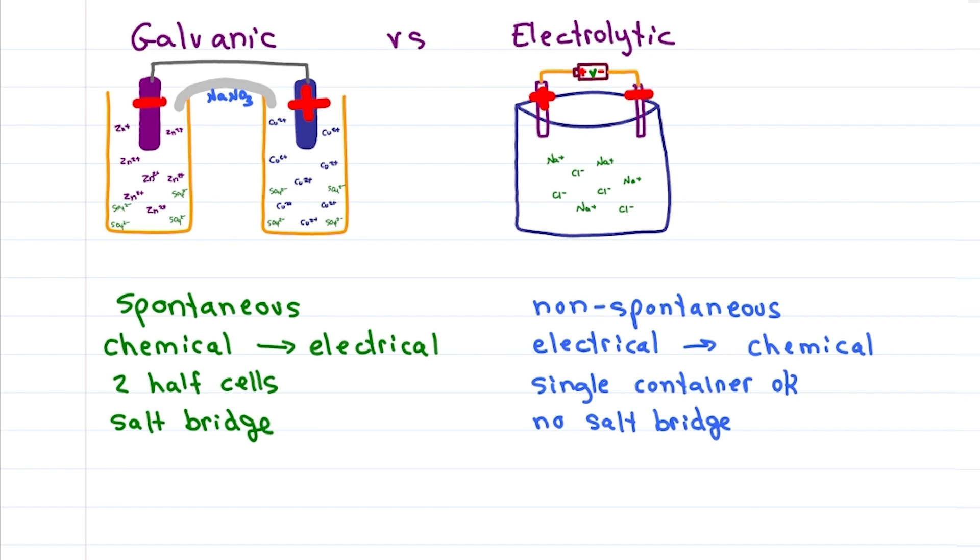And finally, the charges. The galvanic cell spontaneously gives up electrons at the anode making it negative, and accepts electrons at the cathode making it positive. While the electrolytic cell pumps electrons out at the cathode making it negative, and forcibly pulls in stolen electrons at the anode making that positive.